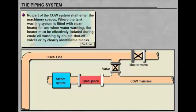No part of the crude oil washing system shall enter the machinery spaces. Where the tank washing system is fitted with steam heater for use when water washing, the heater must be effectively isolated during crude oil washing by double shut off valves or by clearly identifiable blanks.